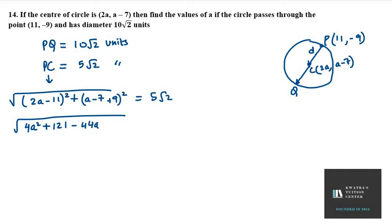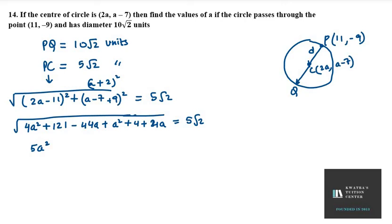For the second term, (a − 7 + 9) = (a + 2), so (a + 2)² = a² + 4 + 4a. Combining all terms on the left-hand side: 4a² − 44a + 121 + a² + 4a + 4. Adding the constants 121 and 4 gives 125.